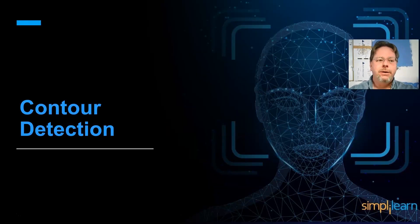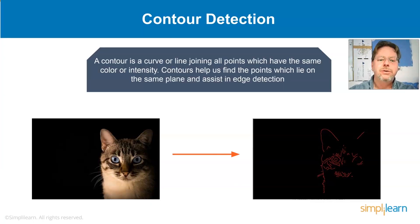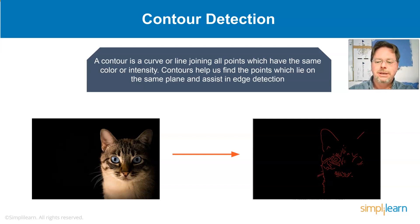Contour detection is built into the OpenCV package. A contour is a curve or line joining all points which have the same color intensity. Contours help us find points which lie in the same plane and assist in edge detection. You can see here we've taken a cat image and done contour detection — it looks almost like someone stenciled it, which is how the computer sees the cat on a black background using contours.